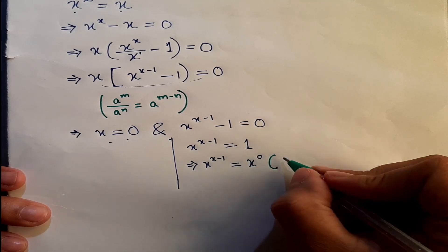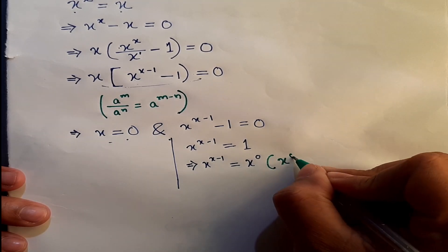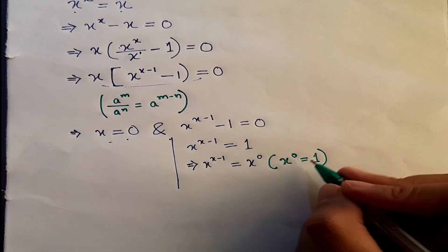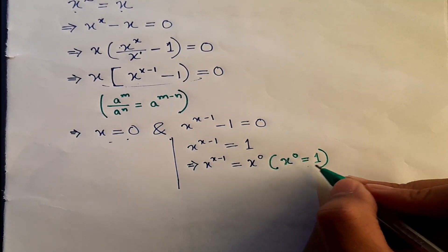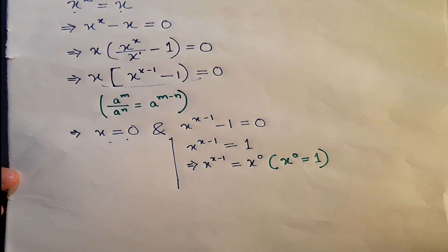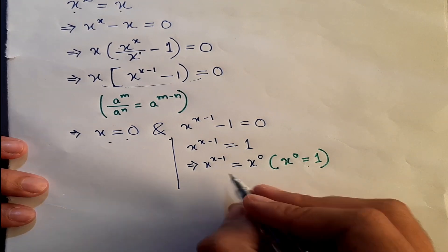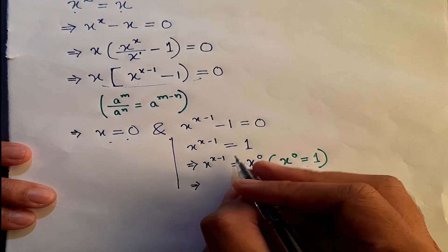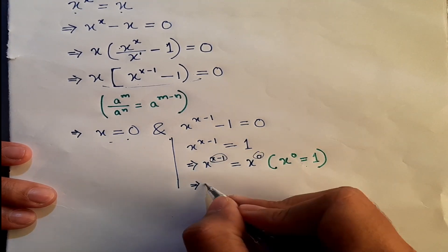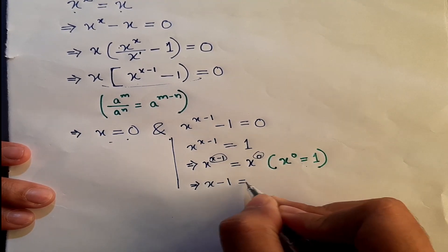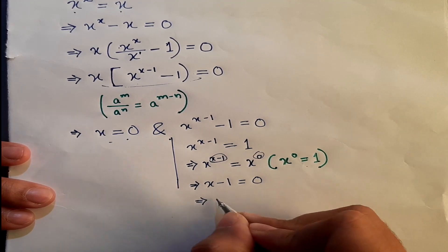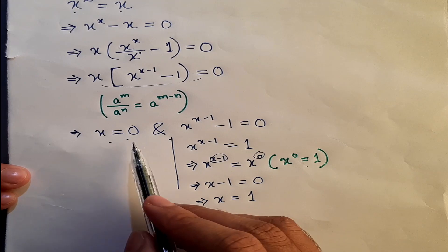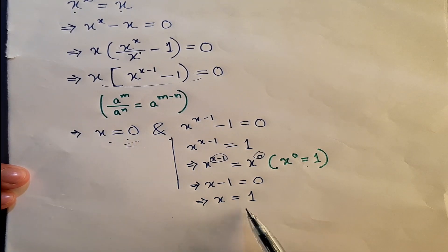We write x to the power 0 because everything to the power 0, except 0 itself, is equal to 1. Since the bases are the same, we equate the exponents: x minus 1 equals 0, giving us x equals 1. So we have two candidate values: x equals 0 and x equals 1.